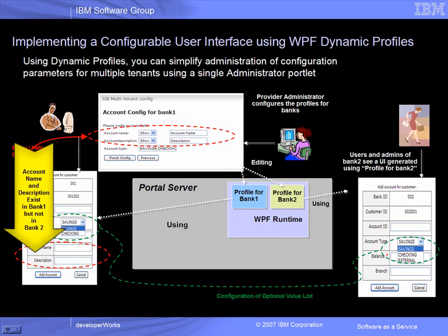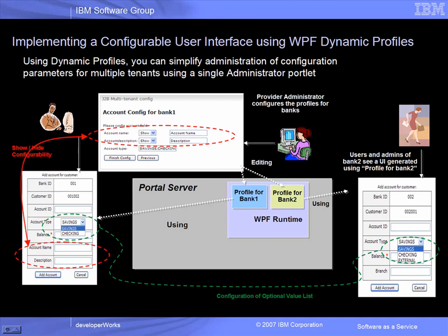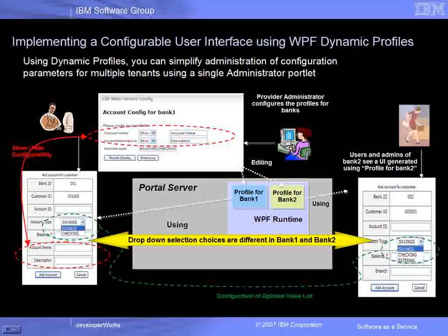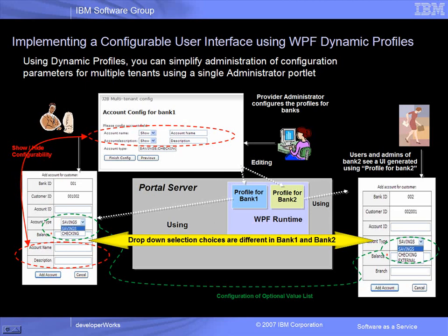However, these fields can be hidden from the same portlet for Bank 2. A provider administrator can also change the list box selections for the account type element so that the choices differ amongst the tenants. In this demo, we will describe how to implement, manage, and specify profiles for multiple tenant banks.